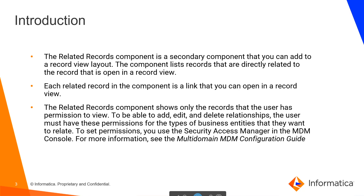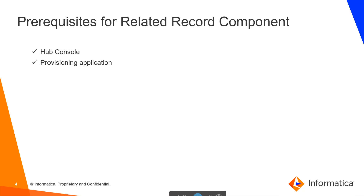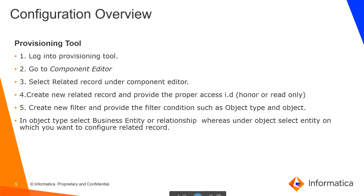To set permissions, you use Security Access Manager, i.e. SAM, in the MDM console. For more information regarding Related Record, you can refer to the MDM Multi-Domain MDM Configuration Guide. The pre-requisite for the Related Record component is the Hub Console and the Provisioning Application.